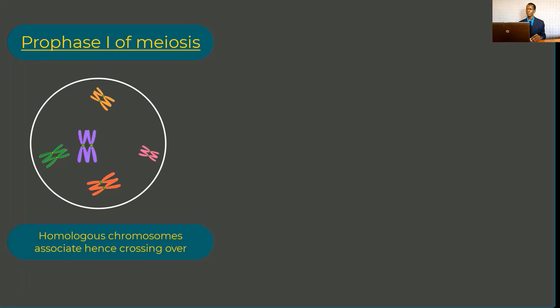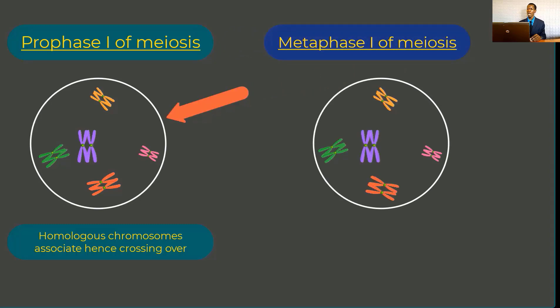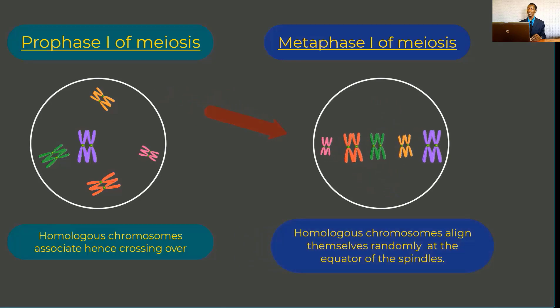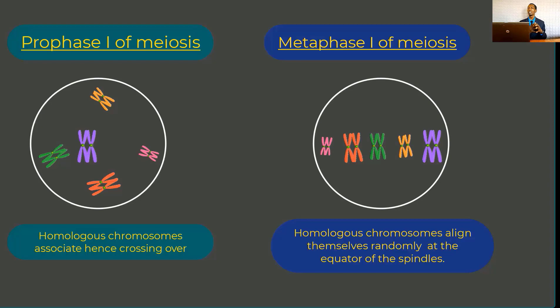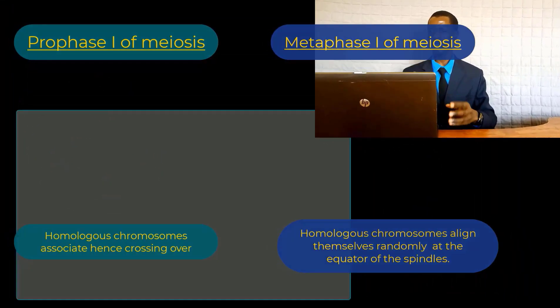Looking at this diagram once again to see how independent assortment may be achieved: initially we have a gamete which is yet to go through the process of division. At the point of metaphase, those chromosomes have aligned themselves at the equator of the cell at random. There are some chromosomes which were close to one another but here they are further from one another. When division occurs, they end up forming different types of gametes with different characteristics. No wonder brothers may not look exactly alike — there are slight differences caused by different genetic combinations, that is, combination of genes from different chromosomes.